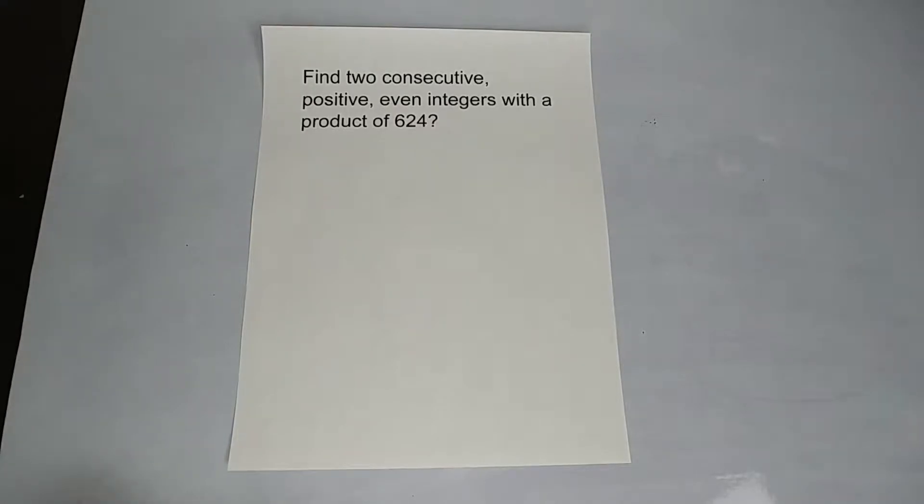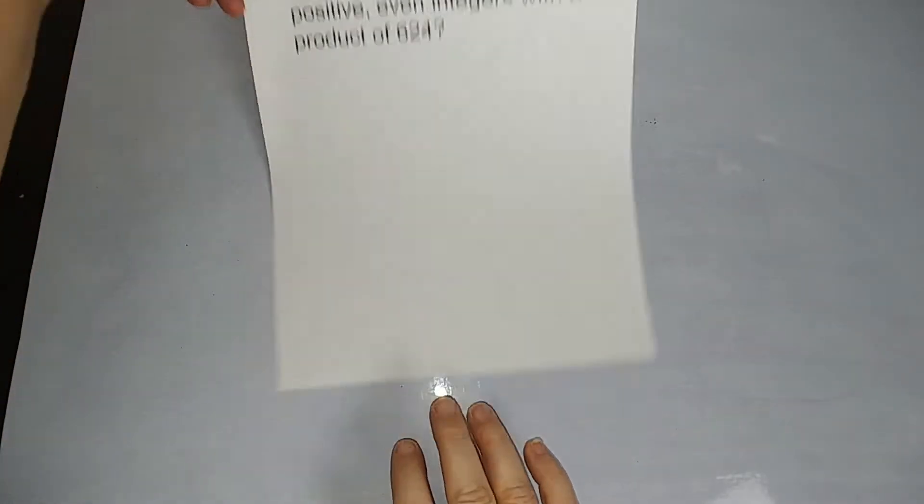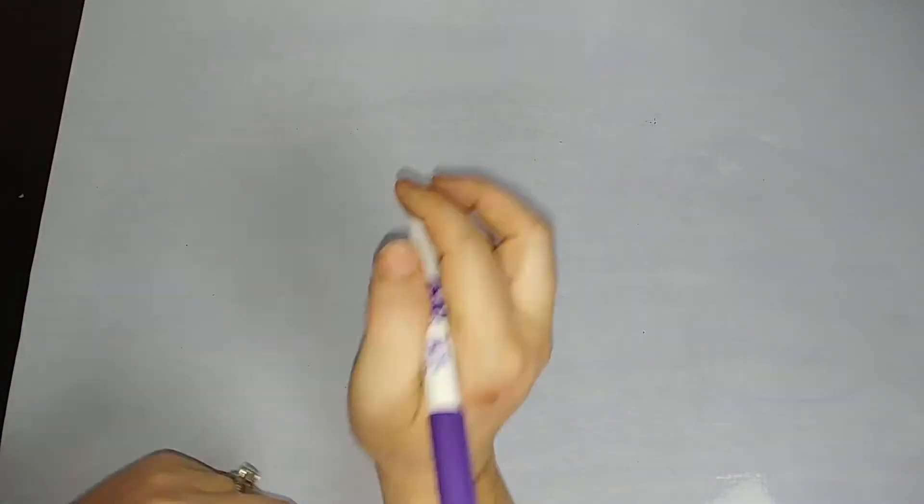So find two consecutive positive even integers with a product of 624. Alright, we see these a lot. We see consecutive positive even, consecutive odd. Okay, so let's talk about what we mean.